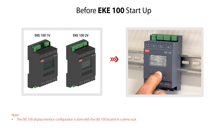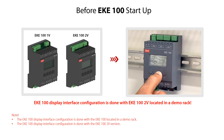All EKE100 display interface configuration examples are done with the EKE100 located in a demo rack, but the configuration procedure is the same for the EKE100 located in a refrigeration system. We demonstrate the display interface configuration by using the EKE100 2V version, as seen here. Most configuration procedures and the navigation structure are identical for the 1V and 2V versions; however, whenever there are any deviations, we will highlight this during the configuration videos.